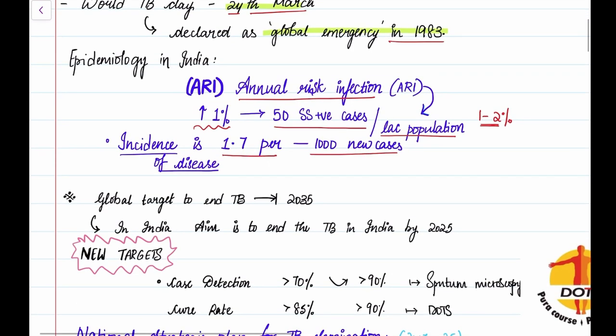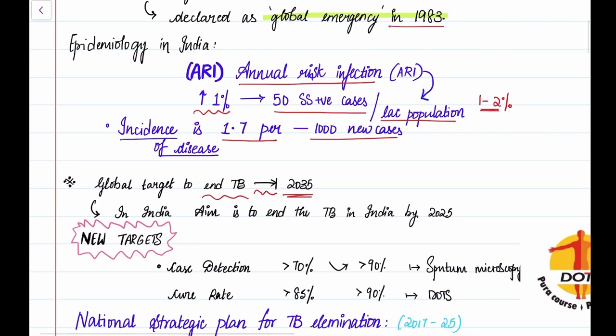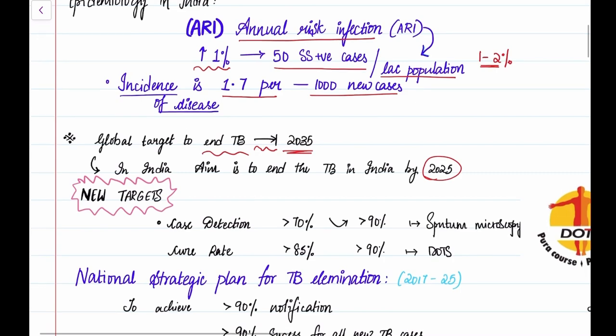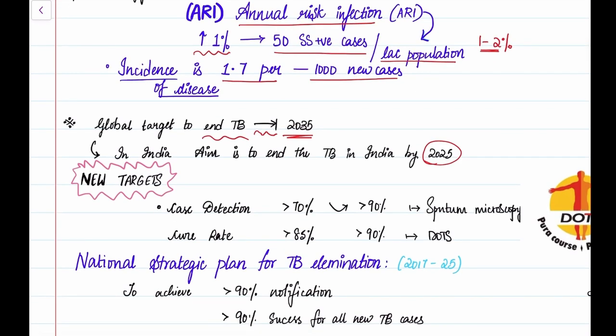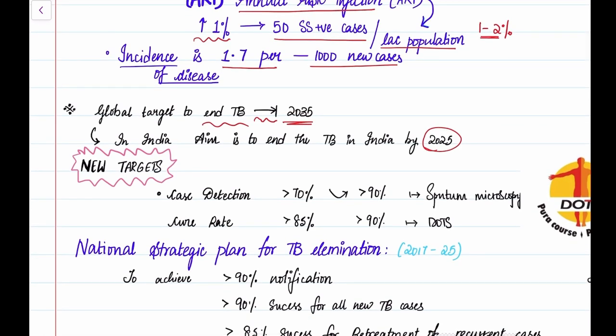The incidence of disease is 1.7 per 1000 new cases. The global target to end TB is by 2035, but in India, we've taken to end TB by 2025. The case detection rate earlier was to be more than 70% and the cure rate more than 85%. But right now, states which have already achieved these targets have to achieve more than 90% of case detection and cure rate.